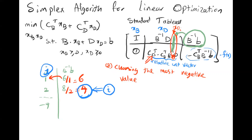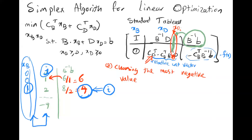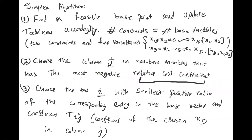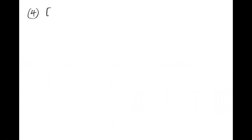Now we know which column j to choose and which row i tells us which base variable is going to leave the basis. We follow row i to identify which base variable is leaving, and in the next step we switch this basis column and the non-basis column to execute the base change.